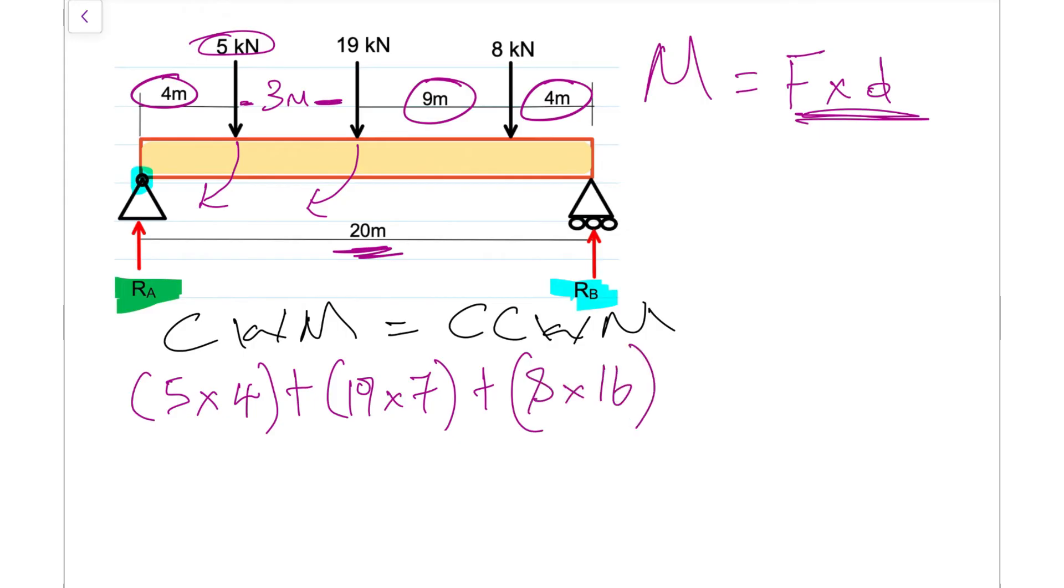At this point there is no other force trying to rotate clockwise, so we turn our attention to R_B. R_B will be trying to go in the opposite direction, the counterclockwise direction, so R_B will be on this side of the equation. Its distance from R_A, its perpendicular distance, is 20, so R_B is our unknown value. To find R_B, let's simplify this equation: 20 plus 19 times 7 is 133, plus 8 times 16 is 128, and that equals R_B times 20.